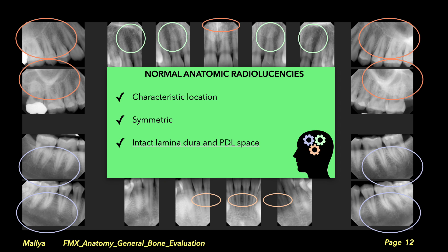To summarize, an easy way to identify normal anatomic radiolucencies: remember their characteristic location. Remember that these radiolucencies will appear symmetric, so comparing the right and left sides allows you to assess whether a radiolucency is anatomic or pathologic in nature. When these radiolucencies are superimposed with teeth, make sure you identify an intact lamina dura and PDL space. This will help you rule out apical pathology and any odontogenic cause, confirming that the superimposed radiolucency is indeed anatomic in nature.